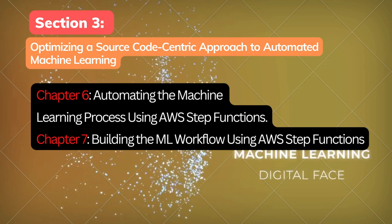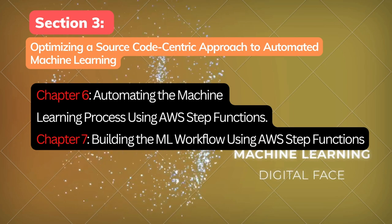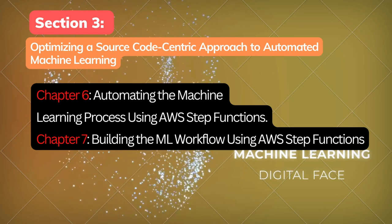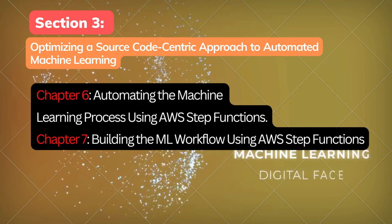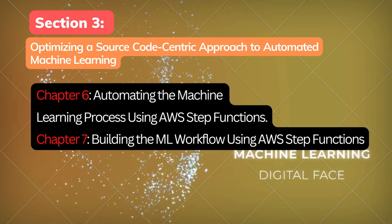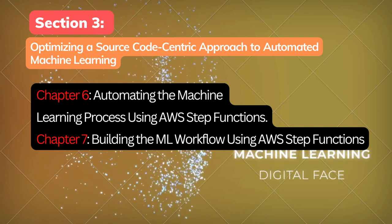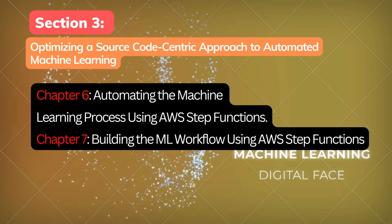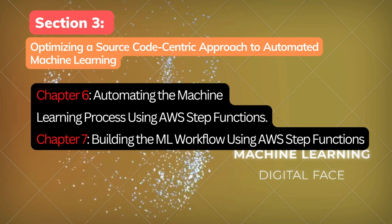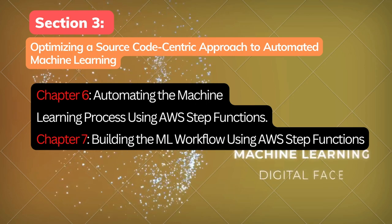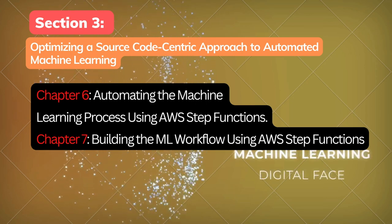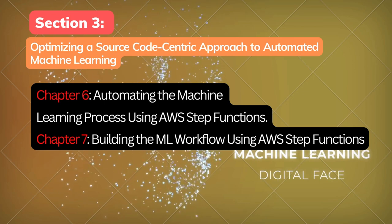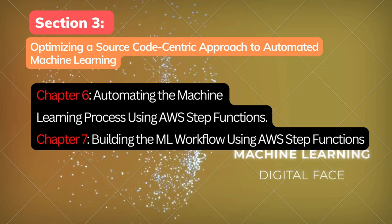Chapter 7, Building the ML Workflow Using AWS Step Functions, elaborates on the role and tasks of the ML practitioner within the context of further optimizing the CI/CD pipeline. It walks you through how to build the codified ML workflow, perform integration testing on the workflow, and deploy the ML model into production using the workflow.